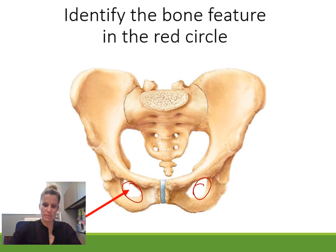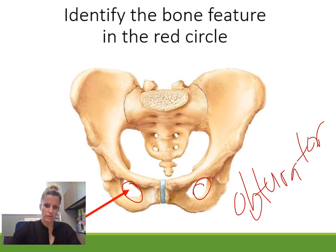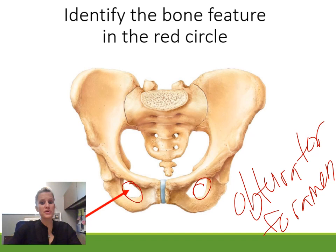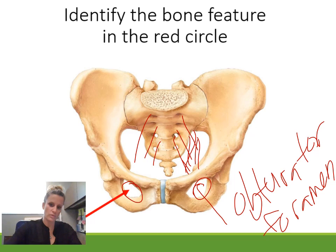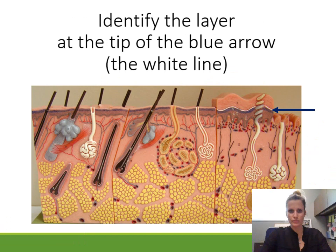Identify the bone feature. We mentioned this earlier — this is the large hole in the front of the pelvis, the obturator foramen. Spinal nerves come through the sacrum and have to get down into the leg, so many of those nerves pass through the obturator foramen.